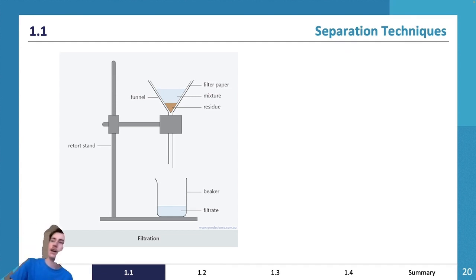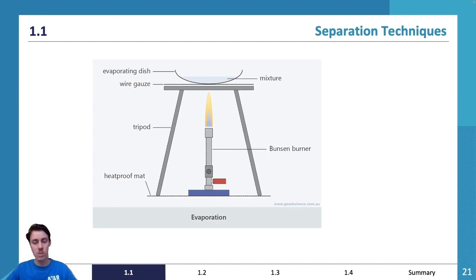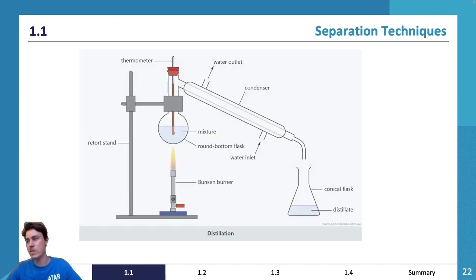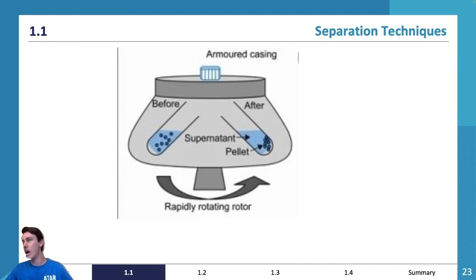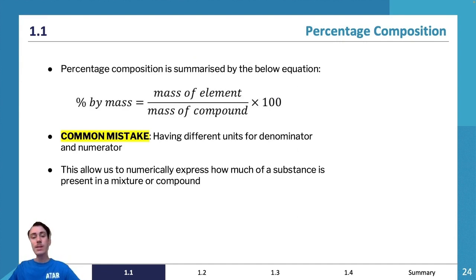Here are photos of all the techniques. You can see filtration — filter paper, residue collected on top, liquid collected at the bottom. Evaporation and distillation setups are shown, with crystallization leaving a solid at the bottom. The centrifuge setup is also shown. Decanting has no special equipment — you just leave the mixture over time, so there's nothing to photograph.